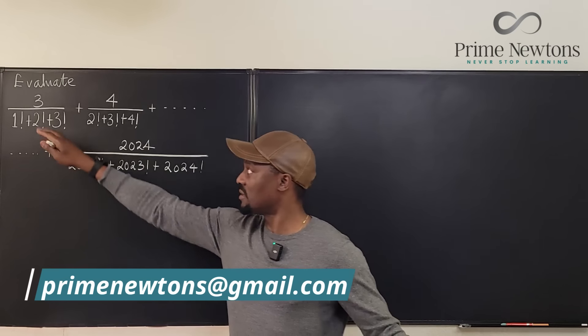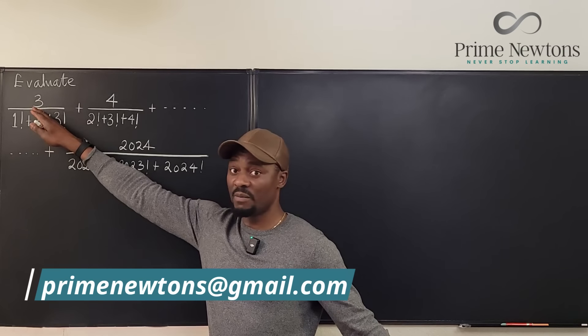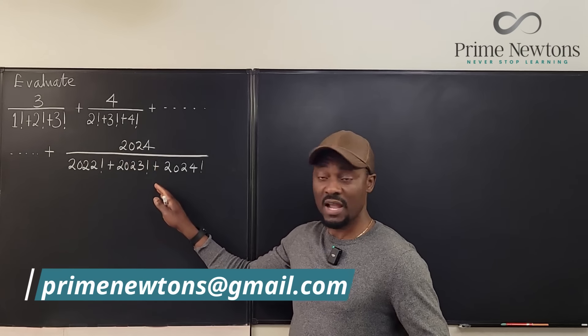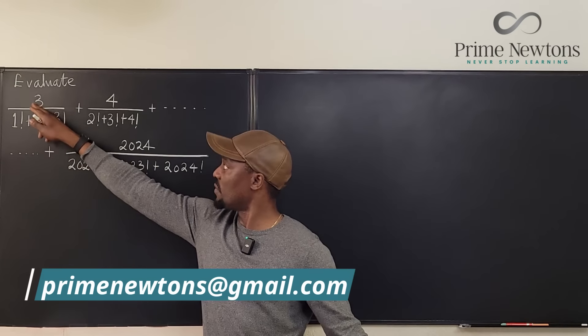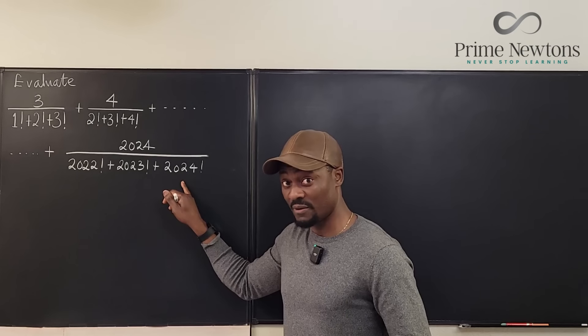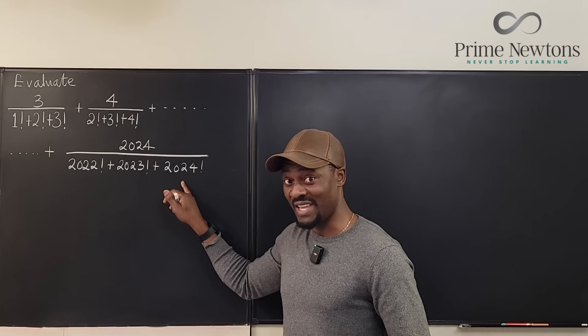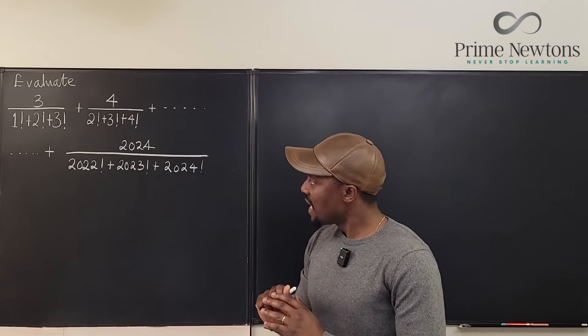Welcome to another video. In this video, we're going to be taking the sum of a finite series. It starts from the first one and ends here, and we're going to go from 3 to 4 to 5. This is not something you would just look at and compute because we're having titanic numbers in the denominator. As you can see, it ends in 2024 factorial.